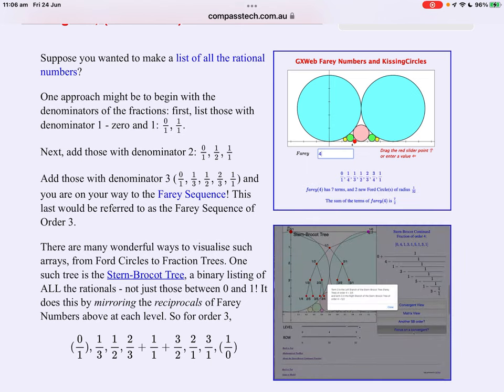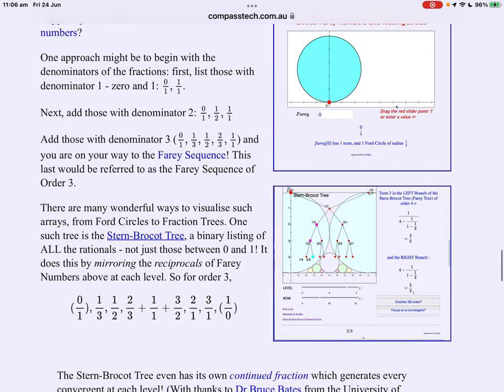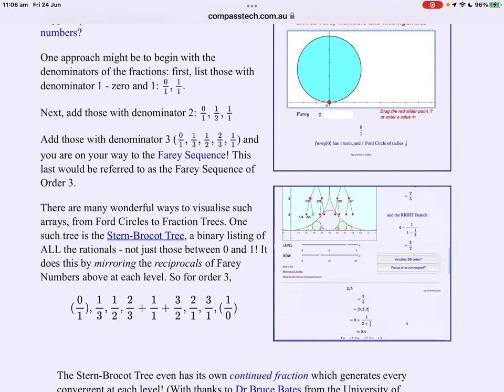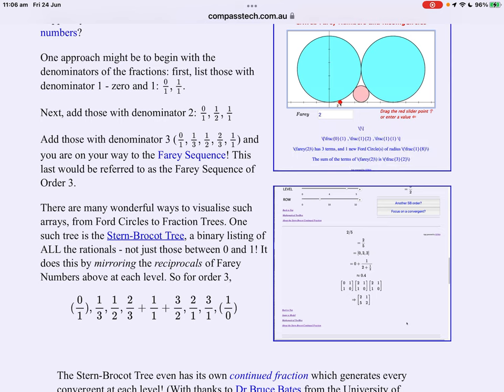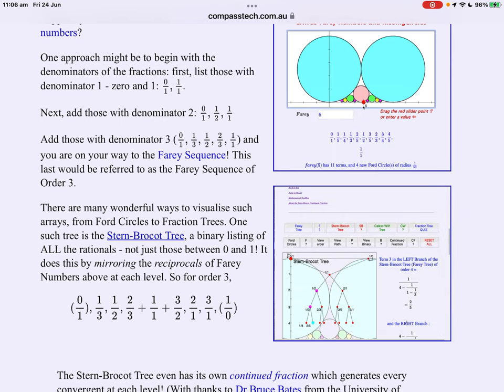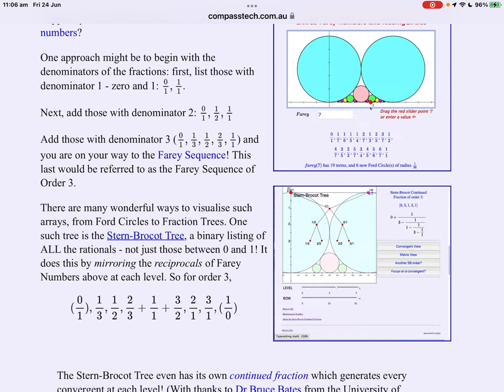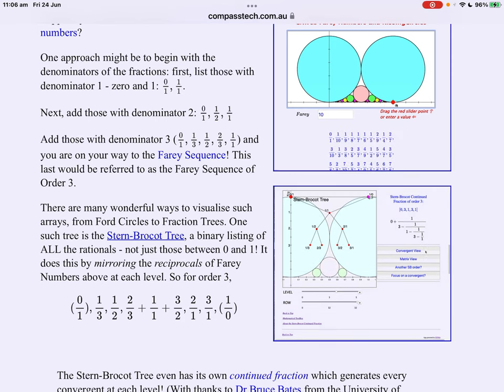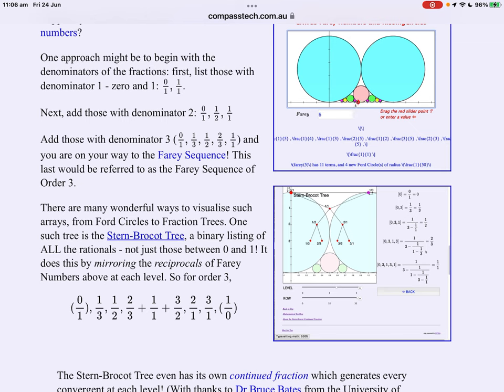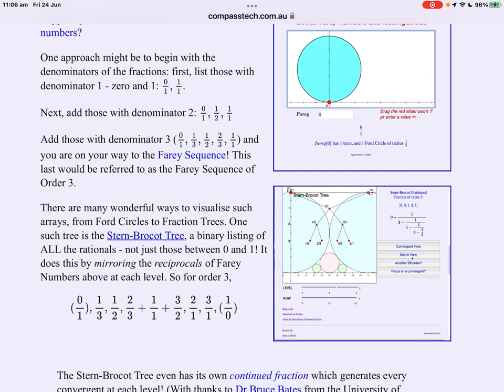Add those with denominator three and we've now got a sequence zero, one-third, one-half, two-thirds and one. This has been called the Farey sequence and again is explored in another page which takes the reader through various elements. So this last one would be referred to as the Farey sequence of order three.